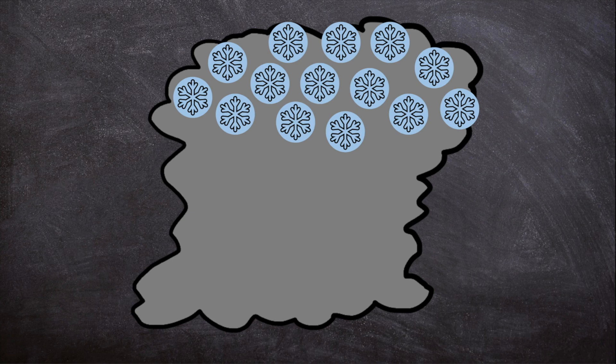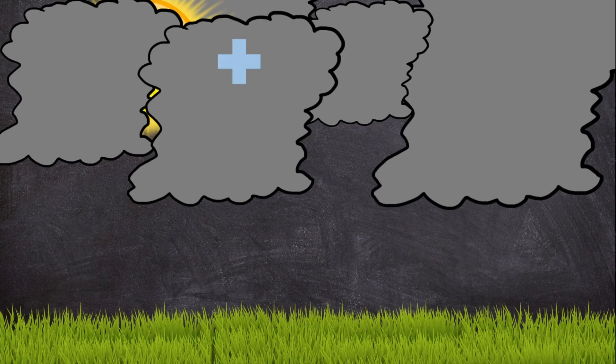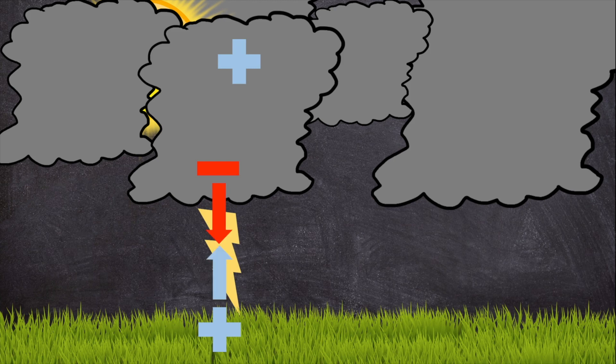All of those collisions create an electric charge. The top part of the storm has a positive charge and the bottom has a negative charge. The ground below the storm becomes positively charged, and then crack! The positive charge coming up from the ground connects with the negative charge reaching down from the thunderhead to create lightning.